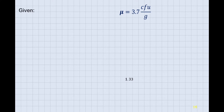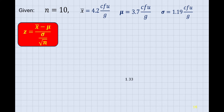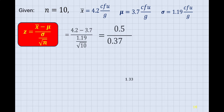For the second question, the population mean is still 3.7, but now n is equal to 10 — that is for 10 servings. The sample mean is 4.2 and the standard deviation is still 1.19. Using the z-score, substitute: 4.2 minus 3.7 is 0.5, and 1.19 divided by the square root of 10 is 0.3763. Dividing 0.5 by 0.3763 gives us 1.33.